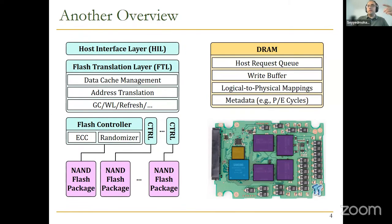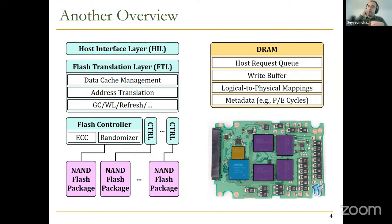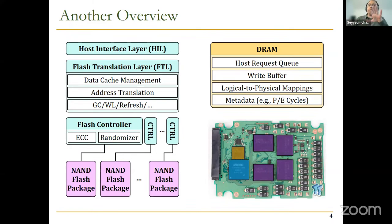We also have DRAM. In this DRAM we have a queue for host requests — when you have several requests from the host from different processors or processes, we need a queue for them. Also in the DRAM we have a write buffer that acts as a kind of cache in the SSD. One of the main data structures in this DRAM is the logical-to-physical mapping table, and also some metadata like P/E cycles, which are essential for managing SSD functionality.